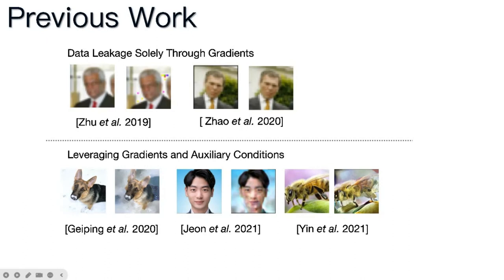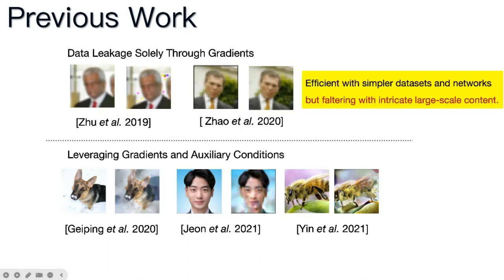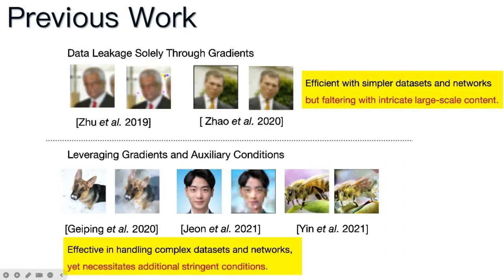Such investigations focus on two primary avenues. The first relies solely on gradient-based attacks, proving efficient with simpler data sets and networks but faltering with intricate large-scale content. The alternative leverages gradients and auxiliary conditions, effective in handling complex data sets and networks, yet necessitates additional stringent conditions.